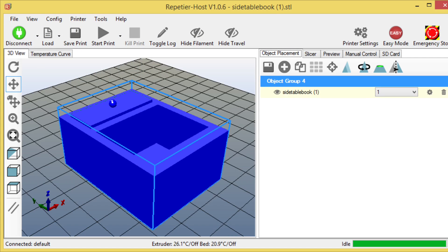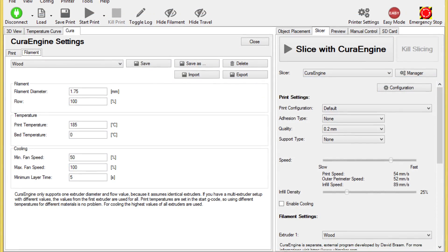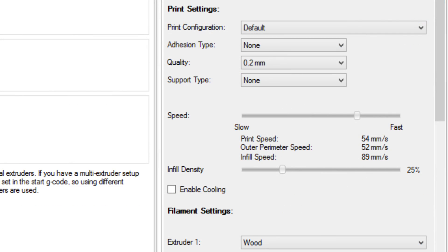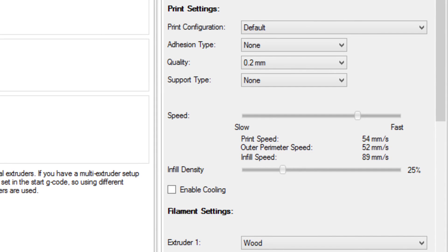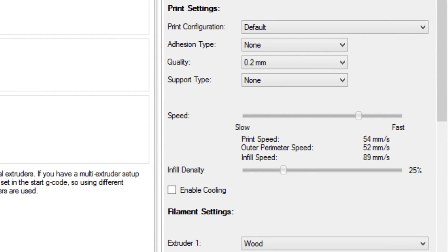So now it was my job to print it, so I brought the STL file into Repetier Host. So now I had to slice it, so I chose the Cura engine, and with that I chose a 0.2 millimeter layer height, a 25% infill density, and then from the drop-down menu for the extruder, I chose a special wood setting that I created in the Cura configuration window.